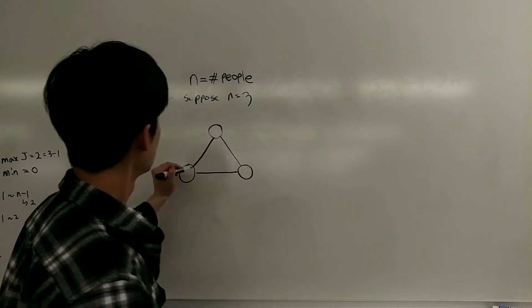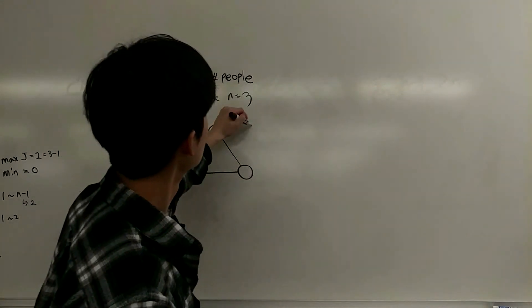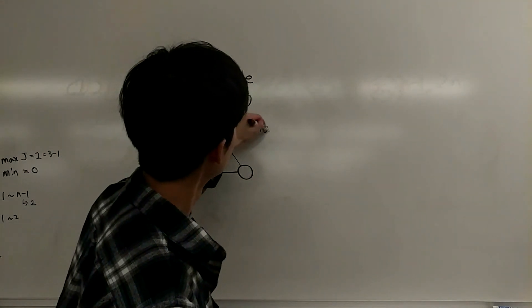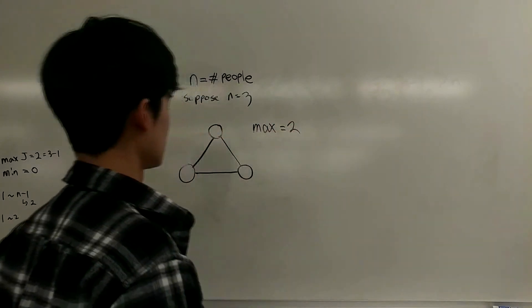So, in this case, everybody is friends with everybody else in the group. Meaning that the maximum number of friends that one person can have is two.